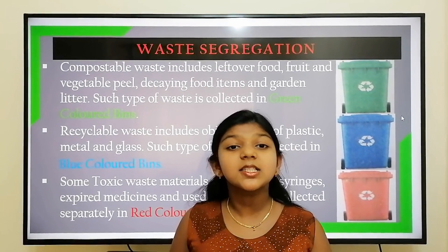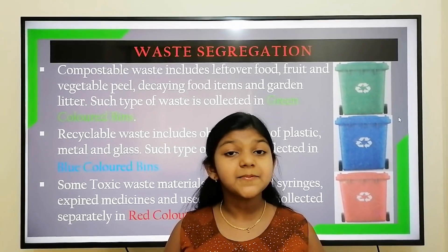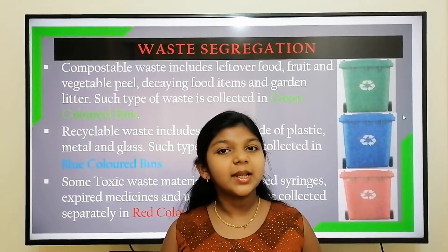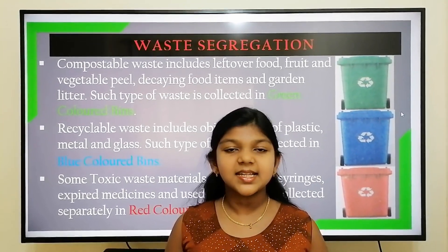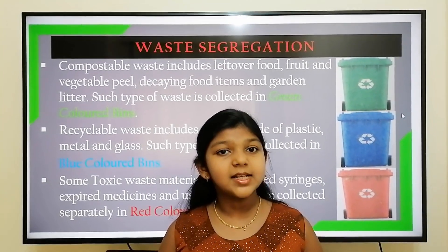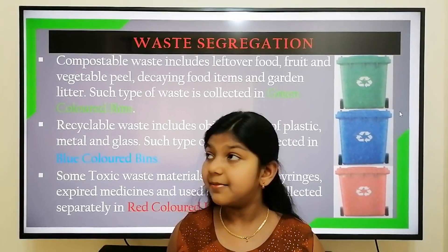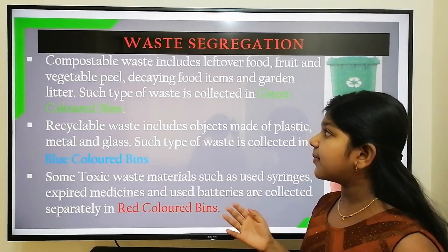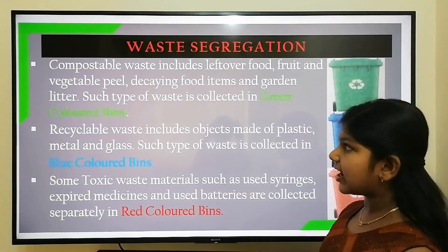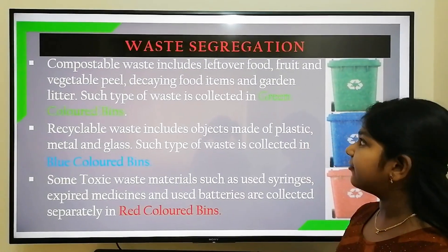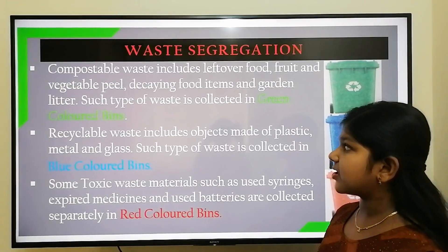The first step in managing waste is waste segregation. At home, we need to keep separate bins for biodegradable waste and non-biodegradable waste. At public areas, it is advisable to mark the bins as biodegradable and non-biodegradable. Compostable waste includes leftover food, fruits and vegetable peels, decaying food items, and garden litter. Such types of waste are collected in green colored bins.